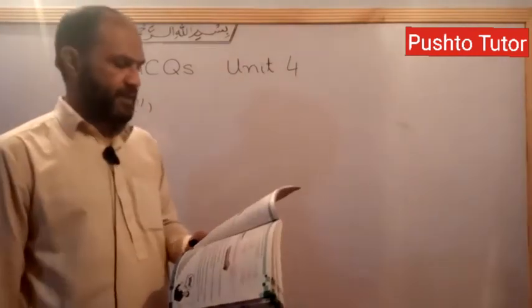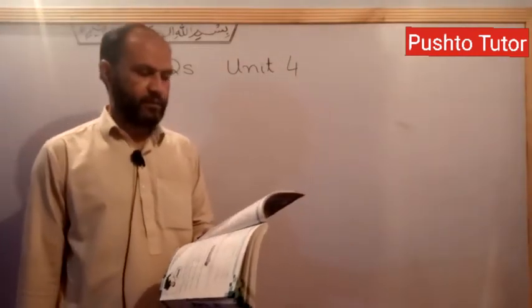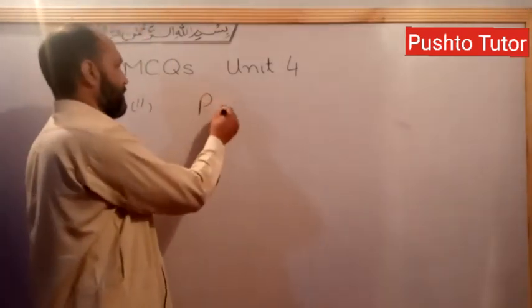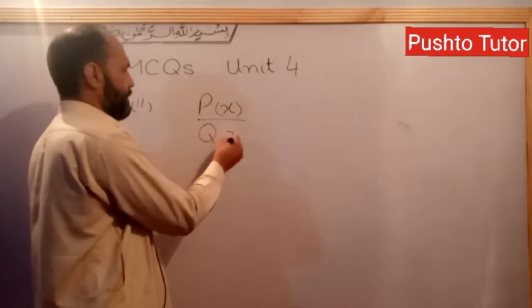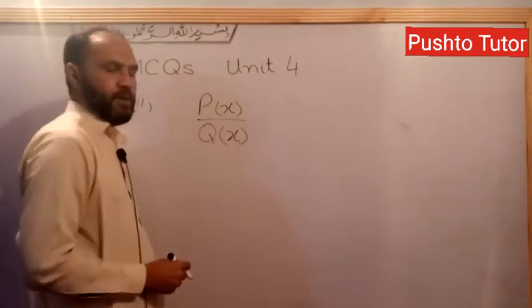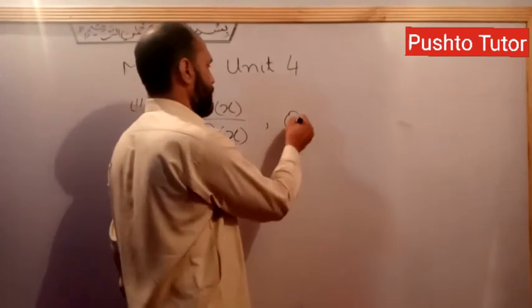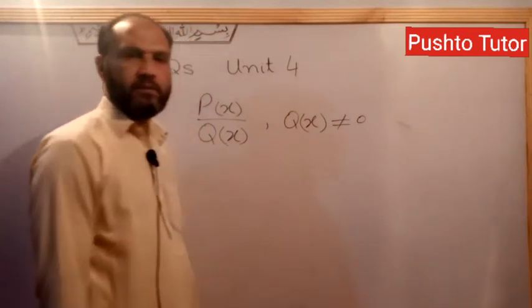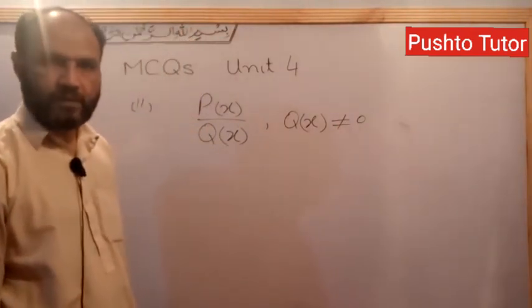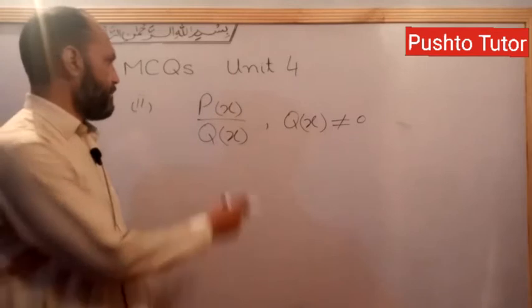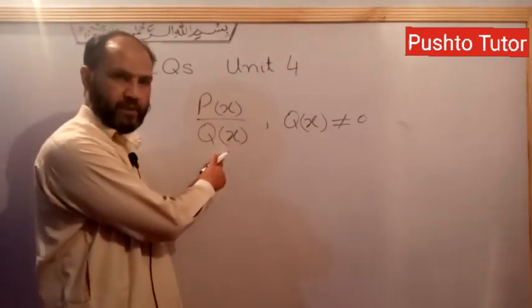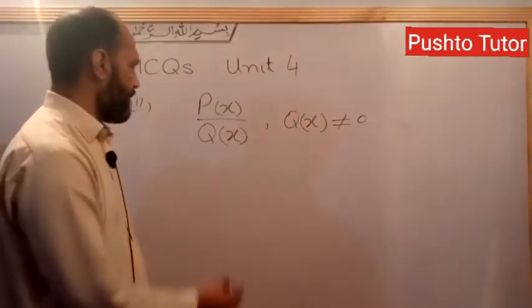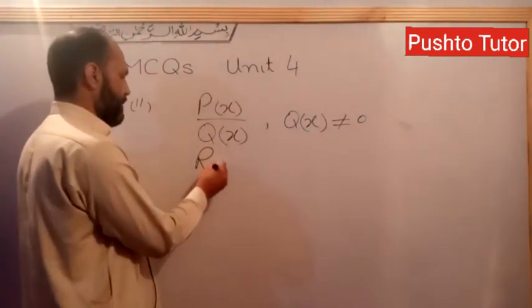Second part: if p(x) and q(x) are two polynomials, then p(x) over q(x) is called a rational fraction on the condition that q(x) is not equal to zero.